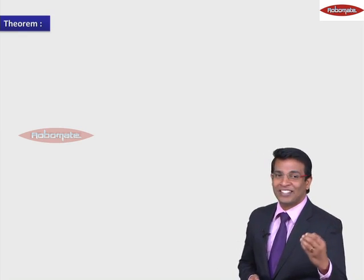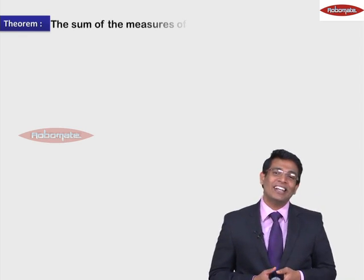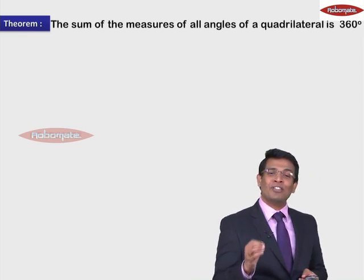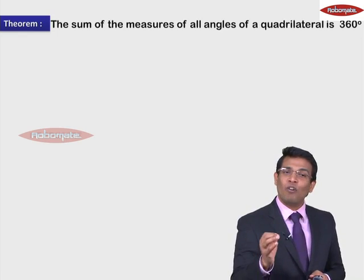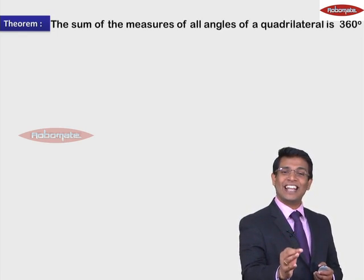Every time a theorem has a statement. So let's have a statement. The statement goes like this: the sum of the measures of all angles of a quadrilateral is 360 degrees.